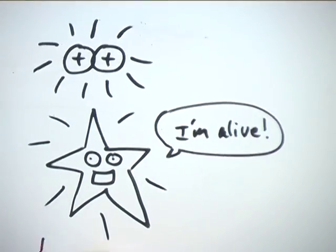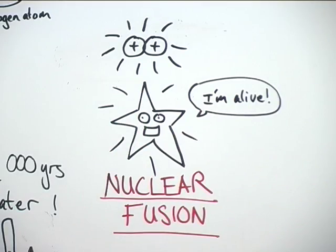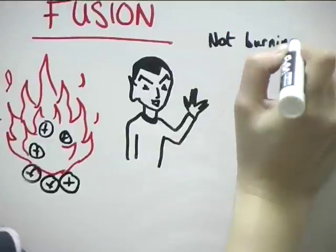A star is born when it can start joining hydrogen nuclei together in a process called nuclear fusion. People refer to this as hydrogen burning, but it isn't burning as we know it.